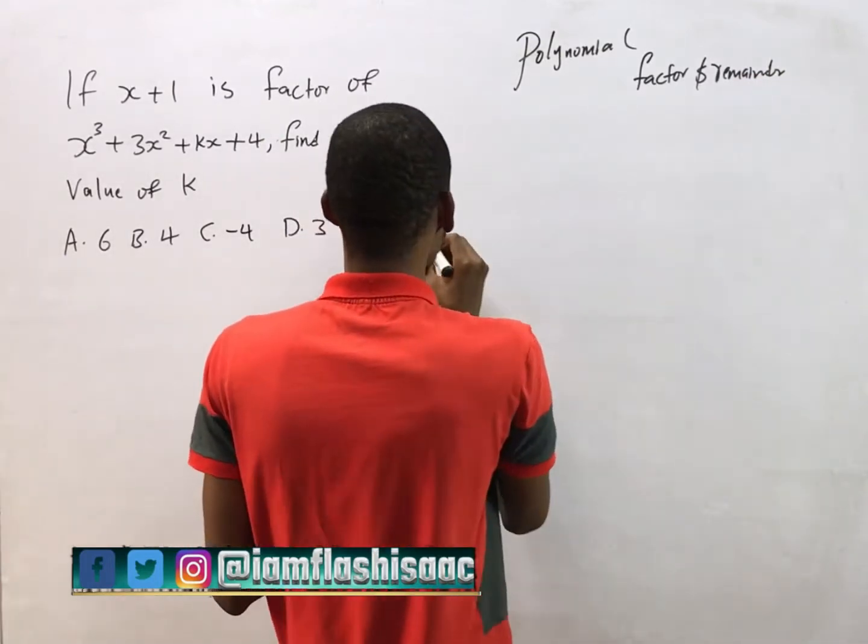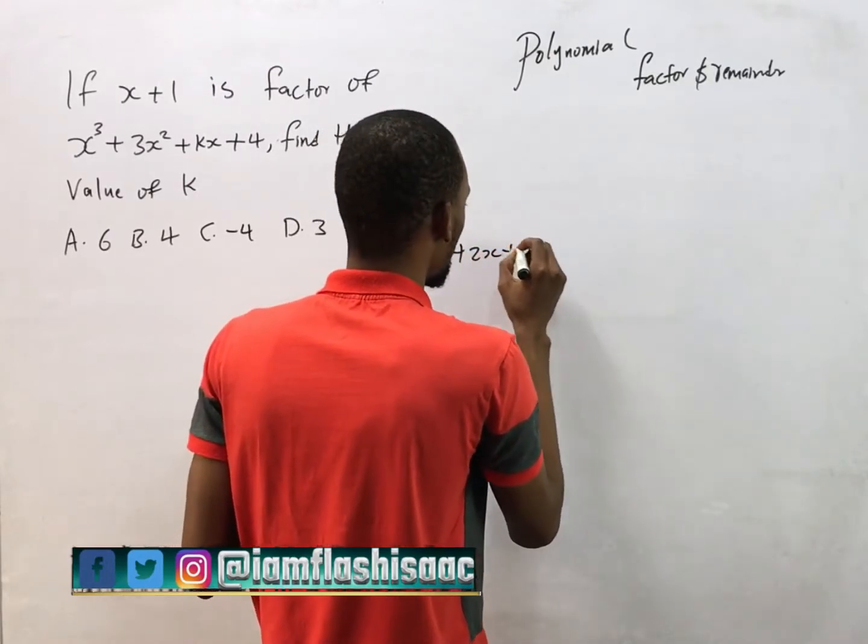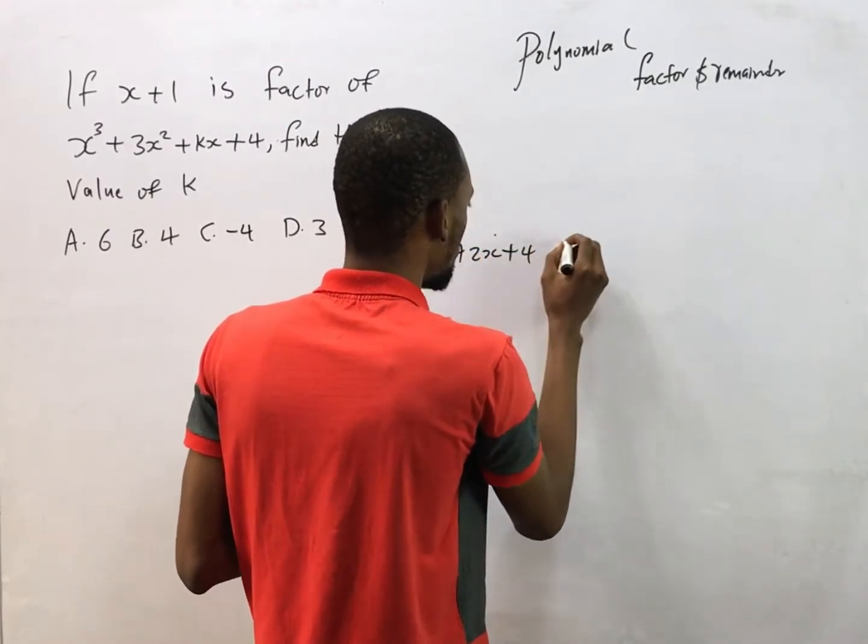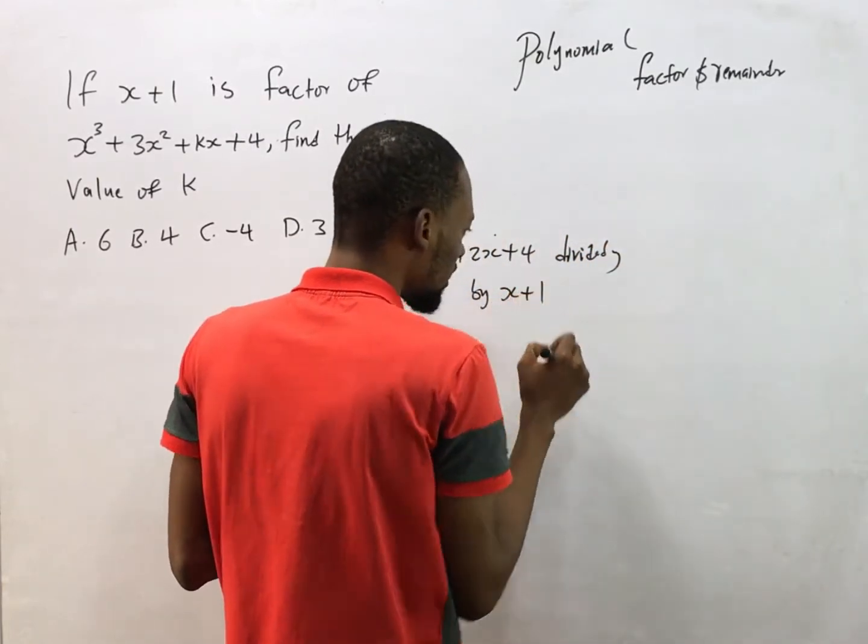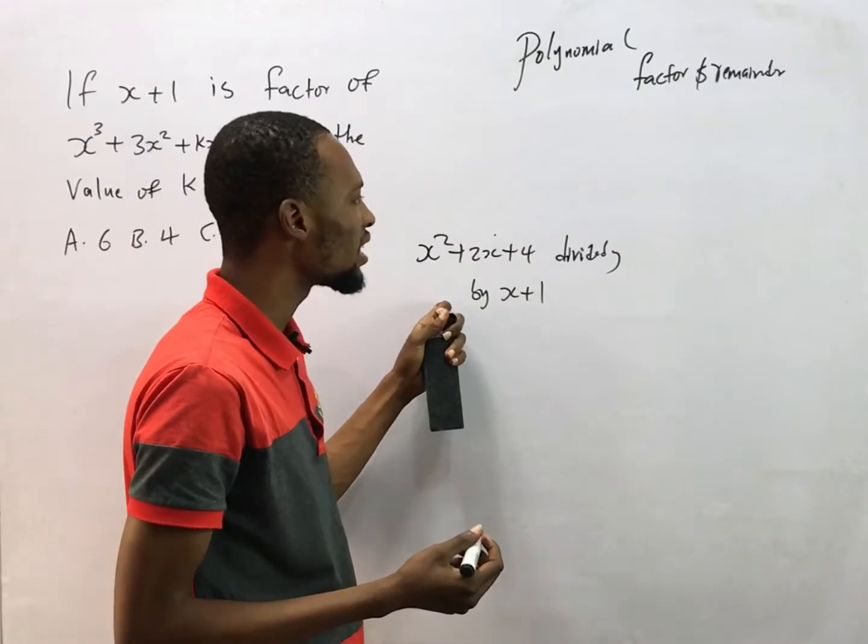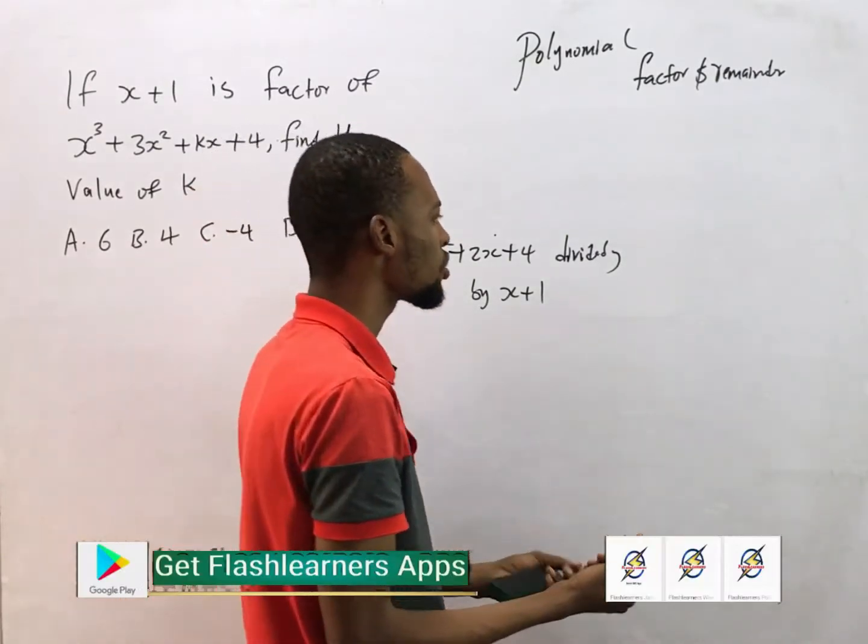If I'm given this polynomial, for example I say s squared plus 2s plus 4 divided by s plus 1, to divide this polynomial I'll simply use long division method to say that